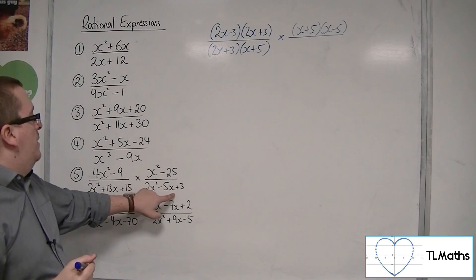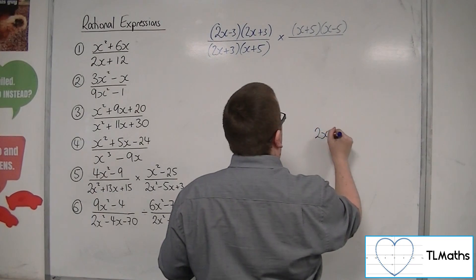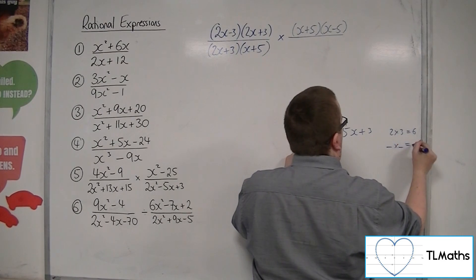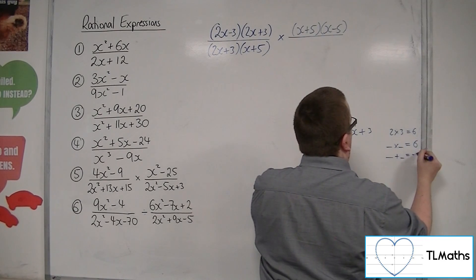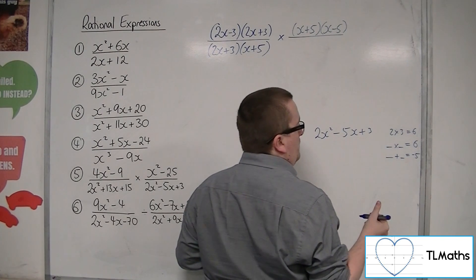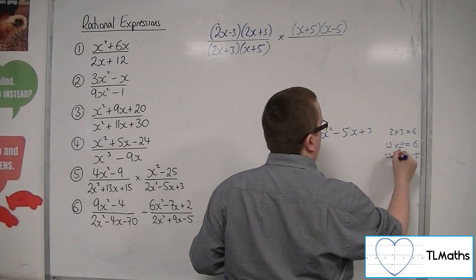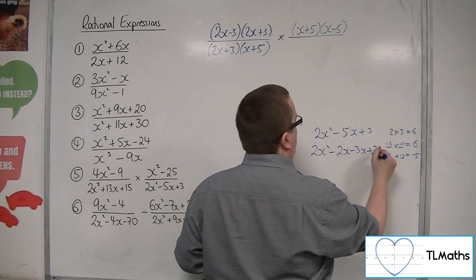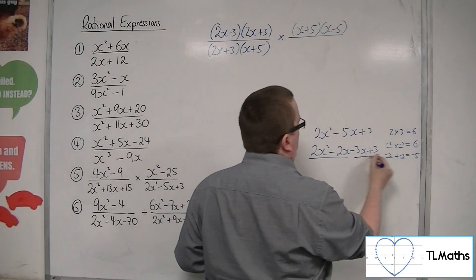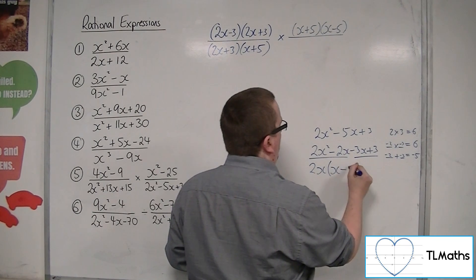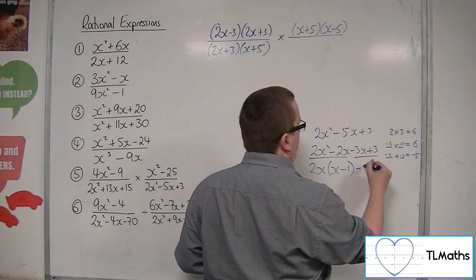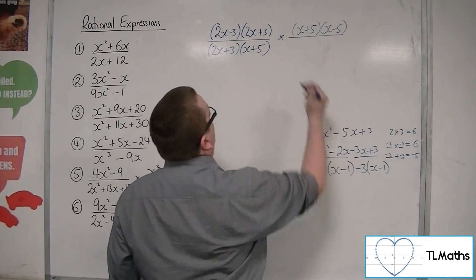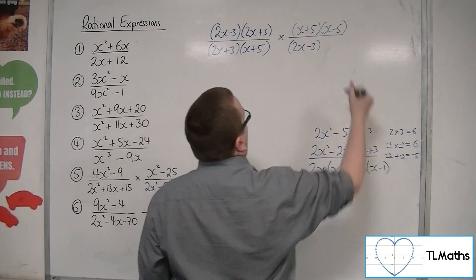And then 2x squared minus 5x plus 3. So 2 times 3 is 6. Two numbers that multiply together to make 6 but add together to make minus 5 would be minus 2 and minus 3. So: 2x squared minus 2x minus 3x plus 3. Factorising both halves gives 2x lots of x minus 1, minus 3 lots of x minus 1. So it's 2x minus 3 times x minus 1.